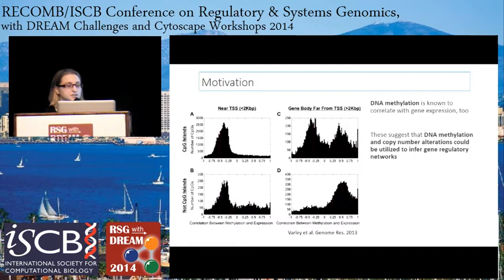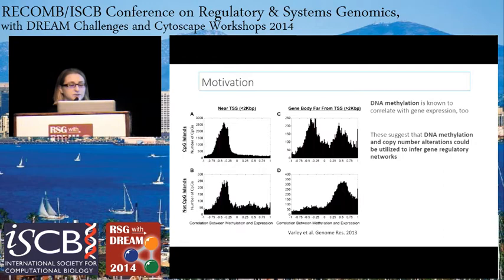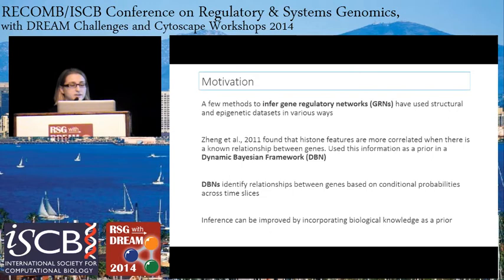DNA methylation is also known to correlate with gene expression. The Varley et al. study showed that the correlation was dependent on the CpG status as well as the genomic position of the methylation, but nonetheless it's correlated. These studies in combination suggest that DNA methylation and copy number alterations could be used to infer gene regulatory networks. The Zhang et al. study used histone features and found they're more correlated when there's a known relationship between two genes, using this information as a prior in the dynamic Bayesian framework.